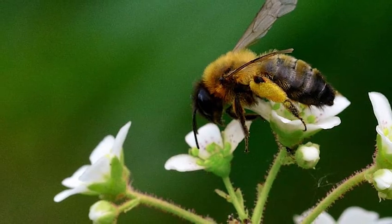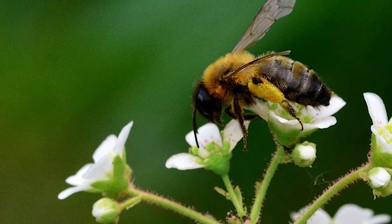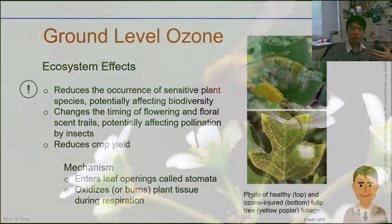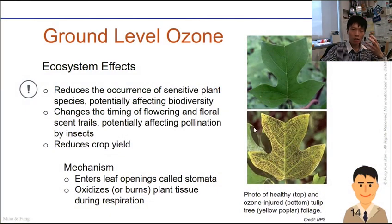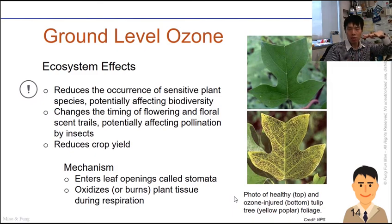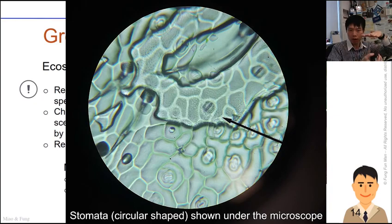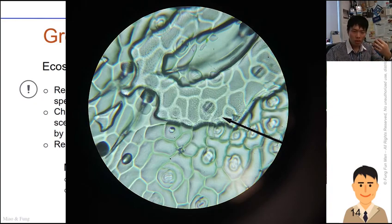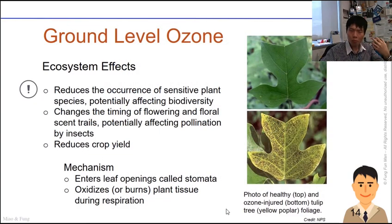Another mechanism by which ozone affects plants is that gaseous ozone particles enter the green leaf through the stomata from beneath, causing oxidative burns to the plant tissue during respiration.